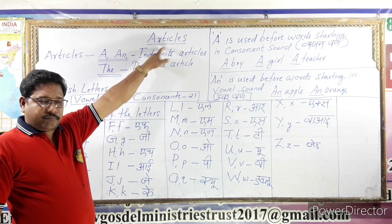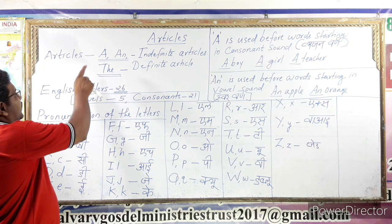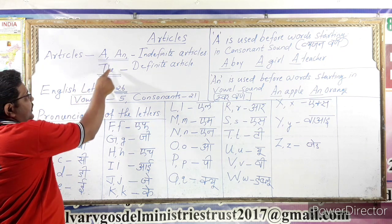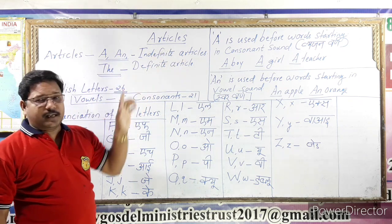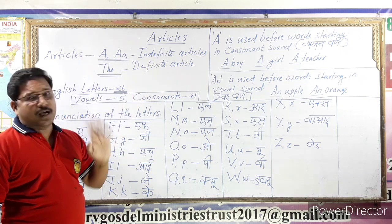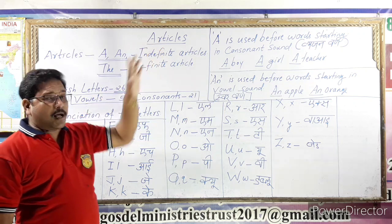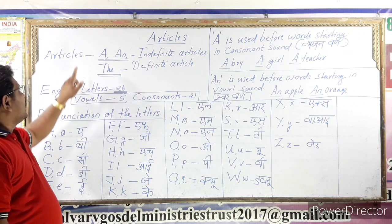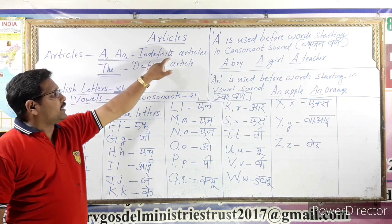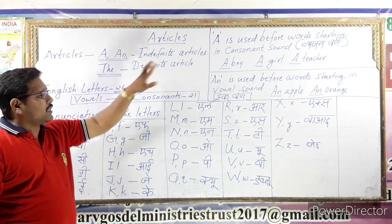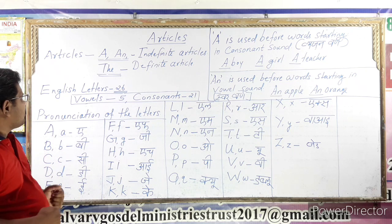Articles — what are the articles? There are three: A, An, and The. A and An are indefinite articles, and The is the definite article. We are going to learn the usage of A and An.